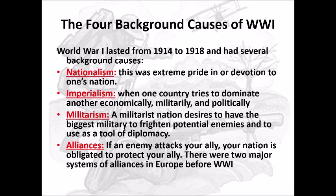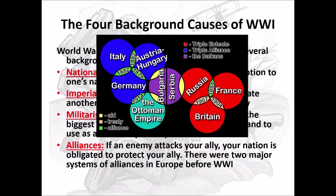The fourth cause — D on the list — is alliances. If an enemy attacks your ally, your nation is obligated to protect them. There were two major systems of alliances in Europe before World War I. The red on the map is the Triple Entente: Russia, France, and Britain. The blue is the Triple Alliance: Italy, Germany, and Austria-Hungary. Italy would later leave that alliance, but we'll talk more about that in the next slide.